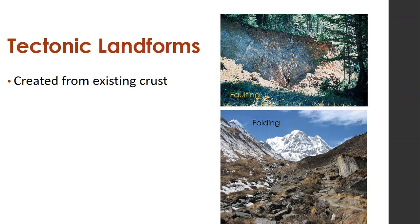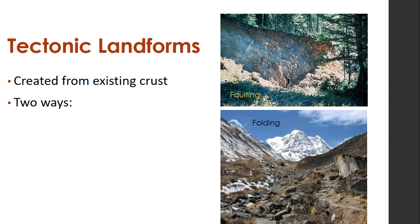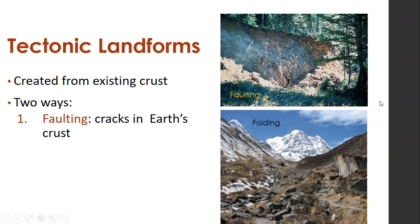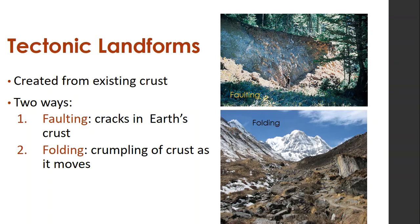Next, we're going to talk about tectonic landforms. These are landforms that are created from existing crust — not new crust being formed, but crust that is already there. This happens in two ways: the first is by faulting, which creates cracks in the Earth's crust. The next one is folding, which is the crumpling of the crust as it gets pushed together and compressed. Folding is a little more intuitive than faulting, but read about it more in your book.